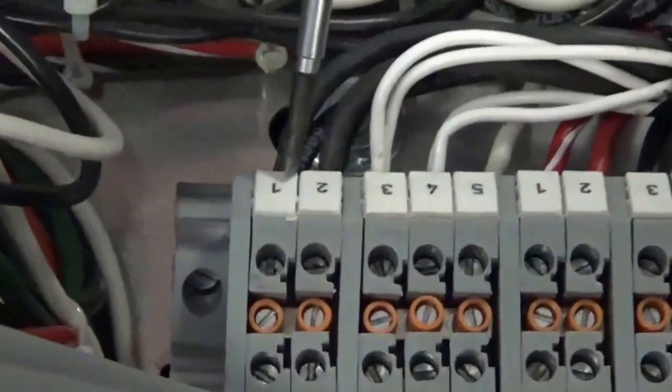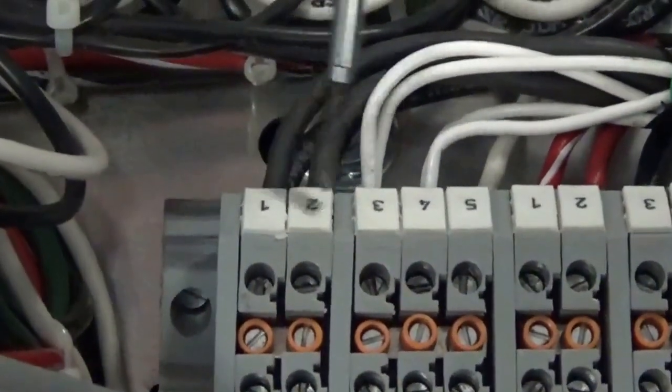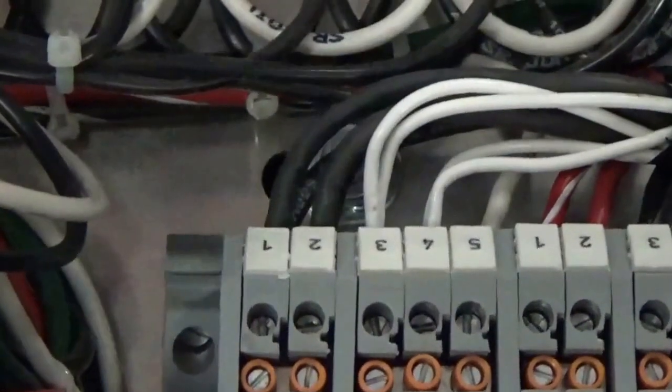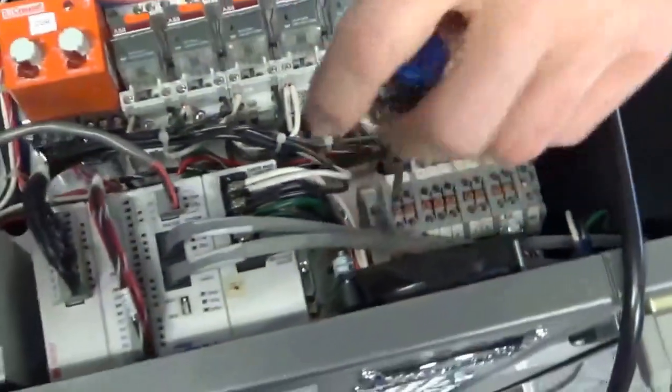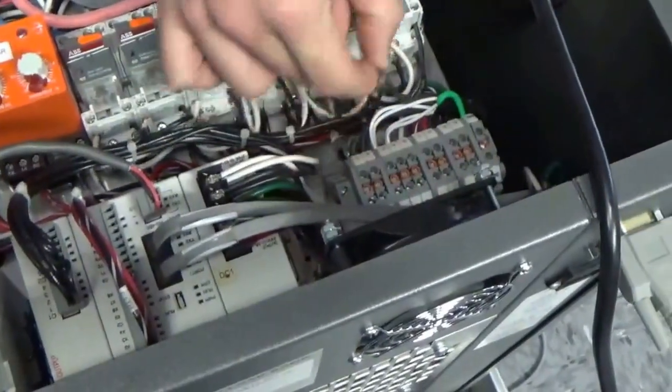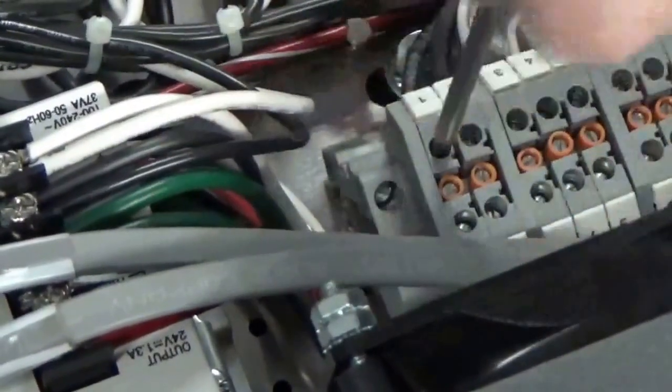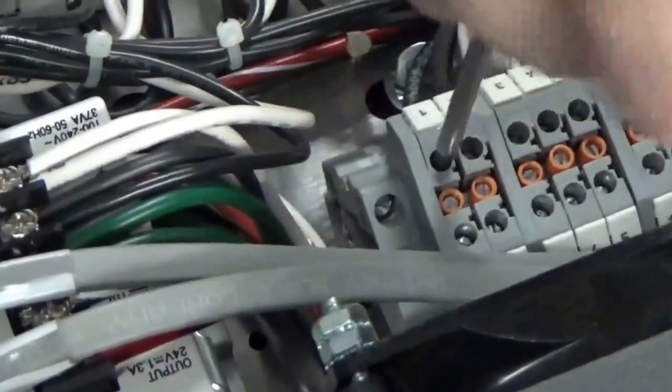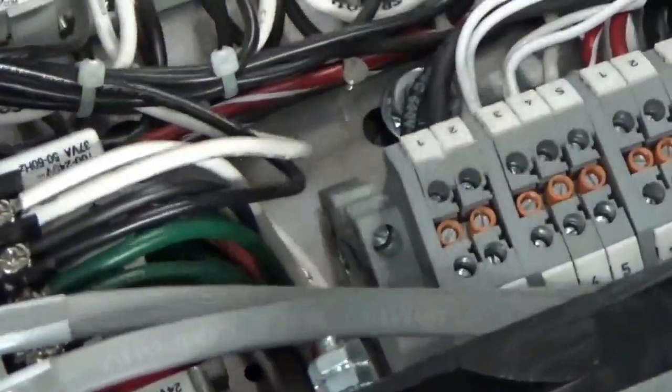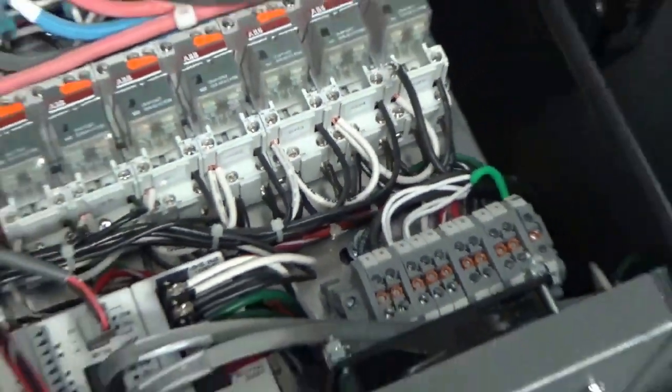So here, terminal block one and two, that's going to be our hots. Three or four are going to be the neutral for the fans. I'm just going to remove one of the wires off of terminal block one. Screw that back down. Let's plug the load bank back in.